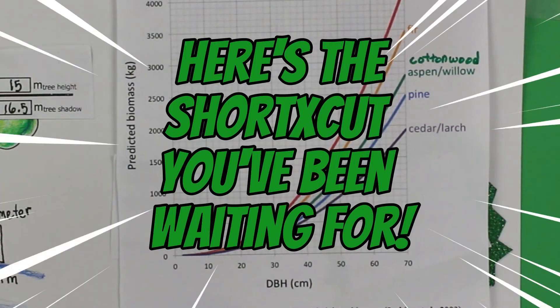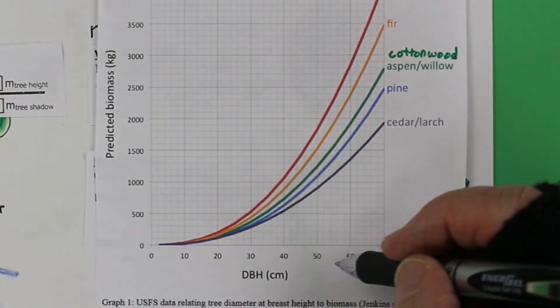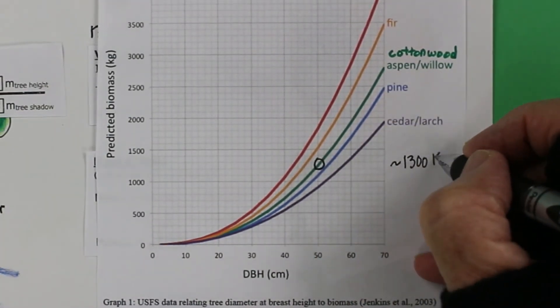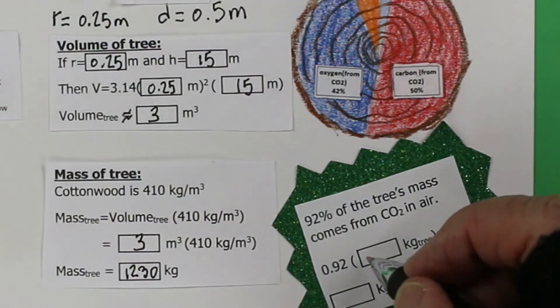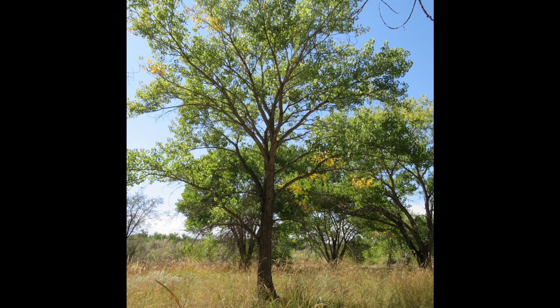Now had we used the shortcut method, we would have used this graph and the diameter of 50 centimeters to see that the tree has a mass of about 1,300 kilograms. But only 92% of it comes from carbon and oxygen in the air. Either way, you figure out the mass. When we're looking at this tree, we're looking at over a ton of mass from carbon dioxide.